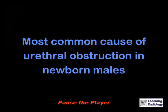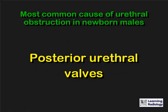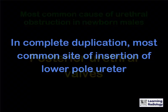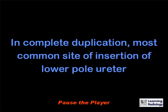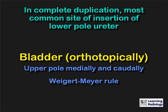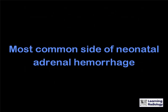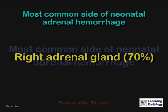What is the most common cause of urethral obstruction in newborn males? Posterior urethral valves. In complete duplication, what is the most common site of insertion of the lower pole ureter? The urinary bladder, orthotopically. The upper pole usually inserts medial and caudally to the lower pole ureter. What is the most common side of neonatal adrenal hemorrhage? The right adrenal gland.